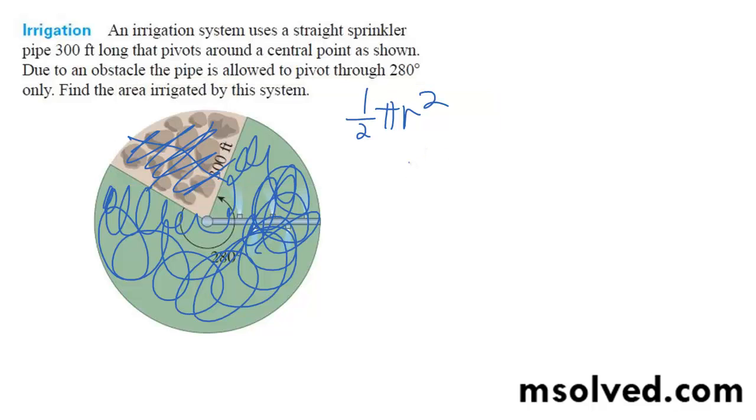So one half times pi times the radius, which is 300, squared